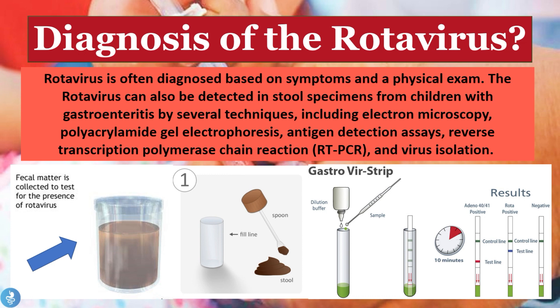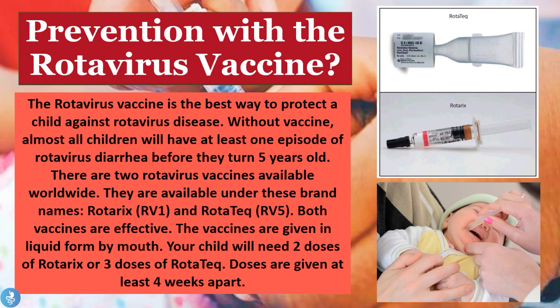Now let's look at how one can prevent this disease. The rotavirus vaccine is the best way to protect a child against rotavirus. Without vaccination, almost all children will have at least one episode of rotavirus diarrhea before they turn five. There are currently two types of rotavirus vaccines available worldwide: Rotarix (RV1) and RotaTeq (RV5), and both vaccines are effective. They are given in liquid form by mouth.